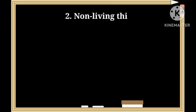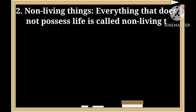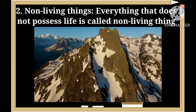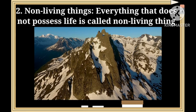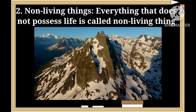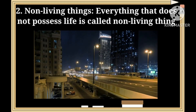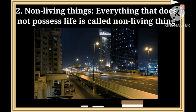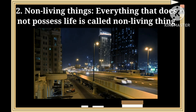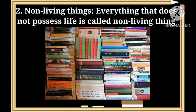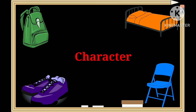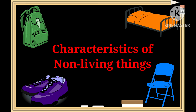The second type is non-living things. Non-living things are not alive; they do not possess life. They do not have cells, do not grow or show movement. Non-living things do not eat, breathe, move, or reproduce, and they do not have senses. Examples include stones, pens, books, etc.